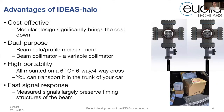What are the advantages of using IDEAS HALO? First, compared to other techniques, IDEAS HALO is very cost-effective. The modular design significantly brings the cost down — we're looking at a few thousand dollars per unit, including everything. It is dual-purpose: we can use it as a halo or profile measurement tool, and also as a variable collimator to get rid of any transverse halo distribution that could be harmful. It also has high portability — everything is mounted on a six-inch conflat six-way cross or four-way cross, and you can still transport it in the trunk of your car.